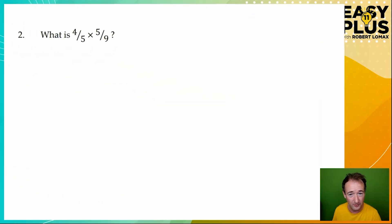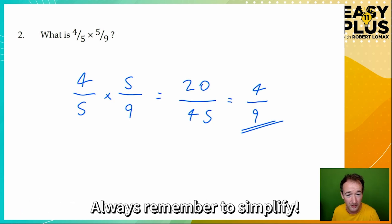What is four fifths of five ninths? So let's multiply the top and multiply the bottom. And of course, we need to simplify this because both of these numbers are divisible by five. And that's our answer.